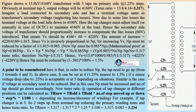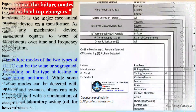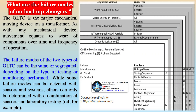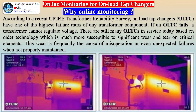According to a recent Cigré transformer reliability survey, on-load tap changers have one of the highest failure rates of any transformer component. If an OLTC fails, a transformer cannot regulate voltage. Many OLTCs in service today are based on older technology much more susceptible to significant wear and tear; this wear is frequently the cause of misoperation or unexpected failures when not properly maintained. Implementing online monitoring for an OLTC is relatively easy — there is a mechanical operations counter on every OLTC that records events cumulatively every time the OLTC operates.